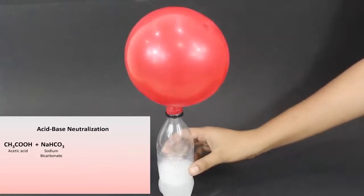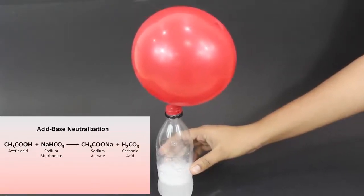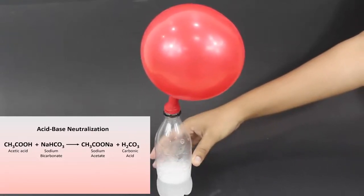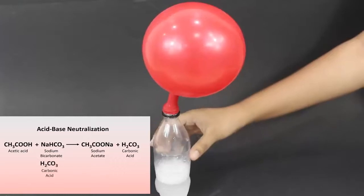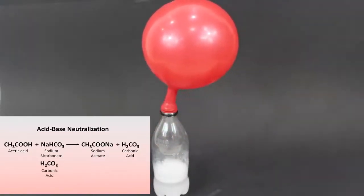Mixing of acetic acid and sodium bicarbonate produces sodium acetate and carbonic acid. Carbonic acid is made when carbon dioxide reacts with water. Thus carbon dioxide gas is produced when the unstable carbonic acid splits into its components, that is water and CO2, which inflates the balloon.